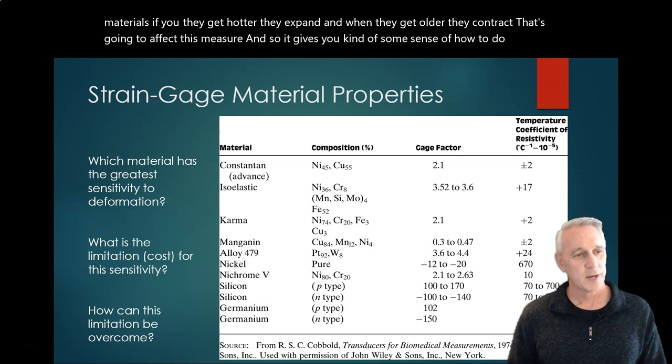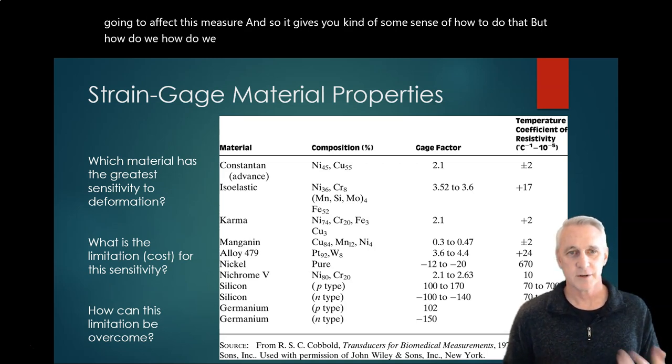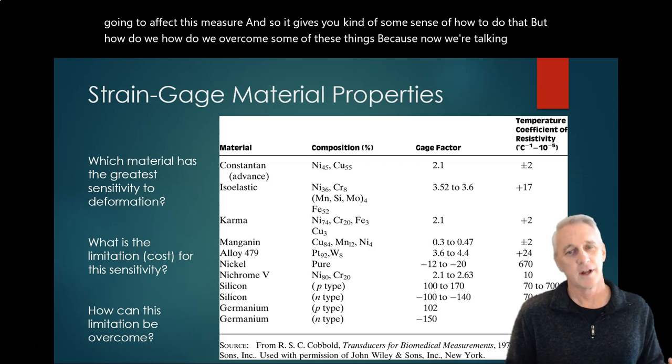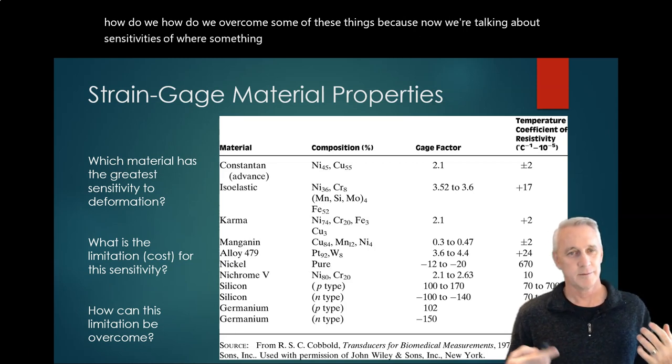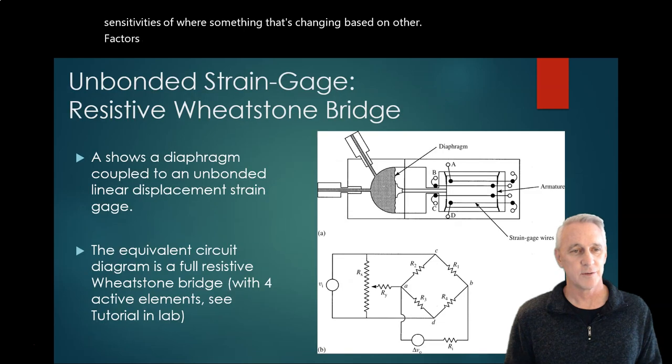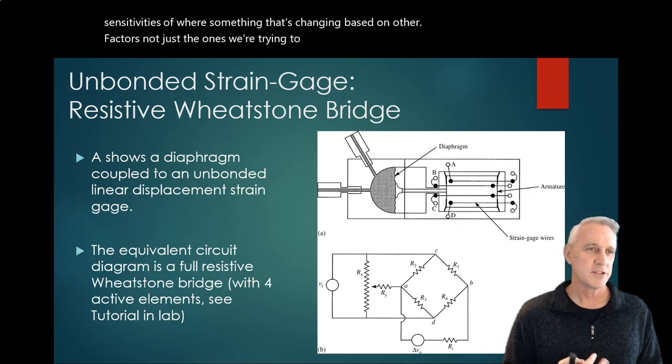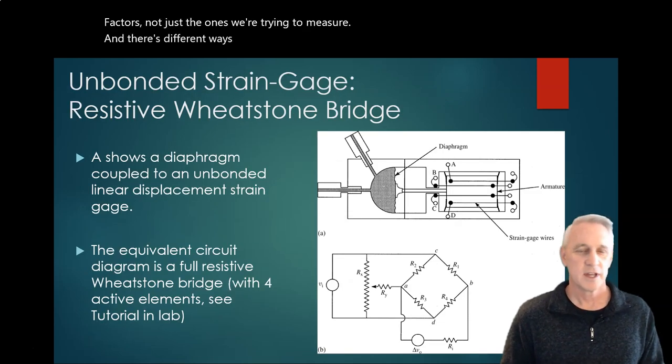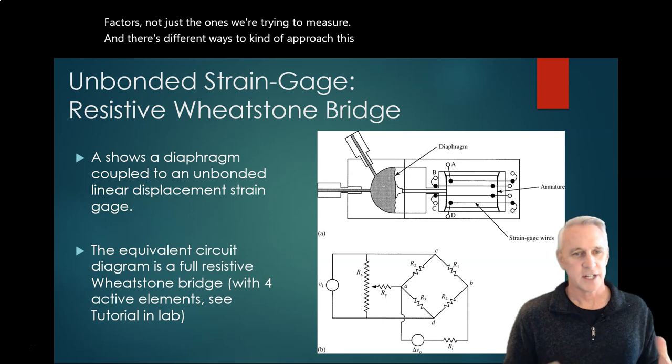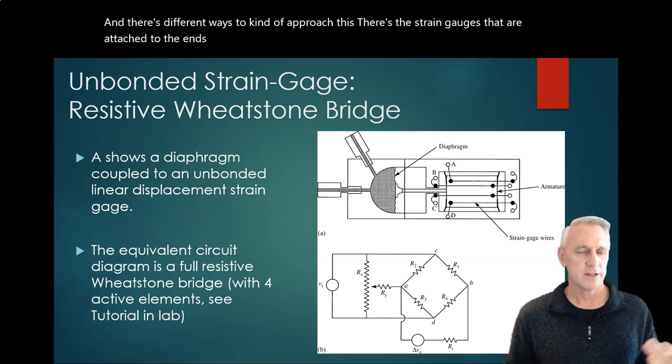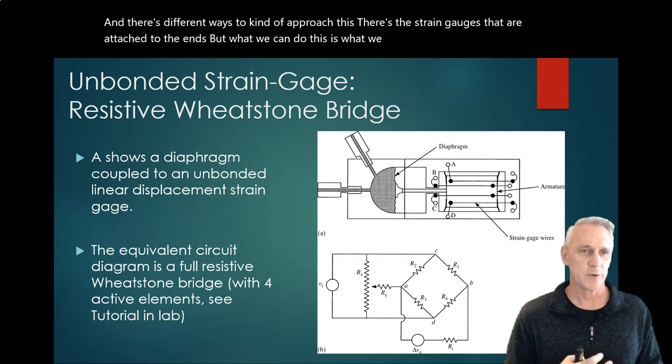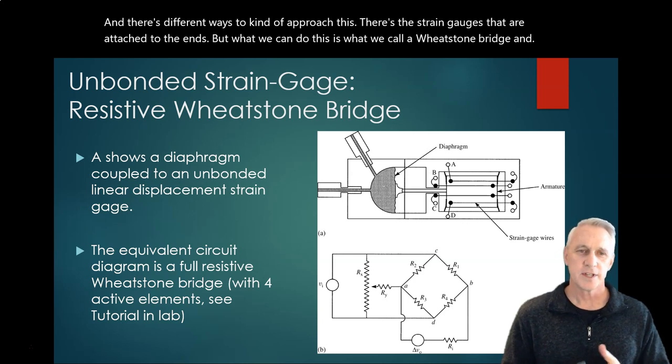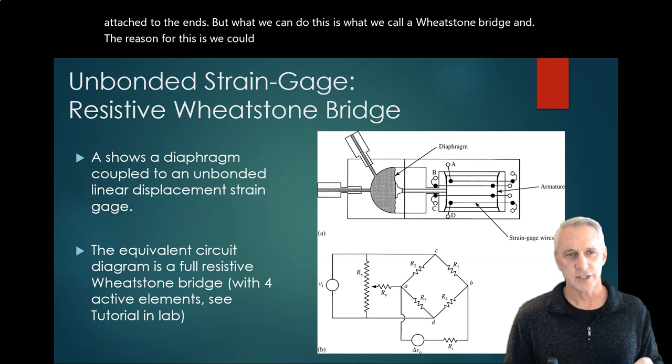But how do we overcome some of these things? Because now we're talking about sensitivities where something is changing based on other factors, not just the ones we're trying to measure. And there's different ways to approach this. There's the strain gauges that are attached to the ends. But one way we can do this is what we call a Wheatstone bridge.